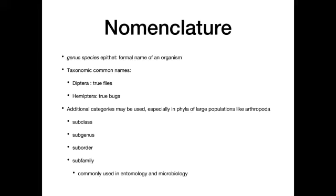Regarding nomenclature, we have common names and the genus-species epithet as the formal name of organisms. For example, Diptera are more commonly known as the true flies, whereas Hemiptera are referred to as the true bugs. Other categories can be used in between, and this is where in arthropods especially you see a lot of subgroups — subclasses, subgenus, suborder — lots of in-betweens to help distinguish minor characteristic differences or commonalities between two different species.